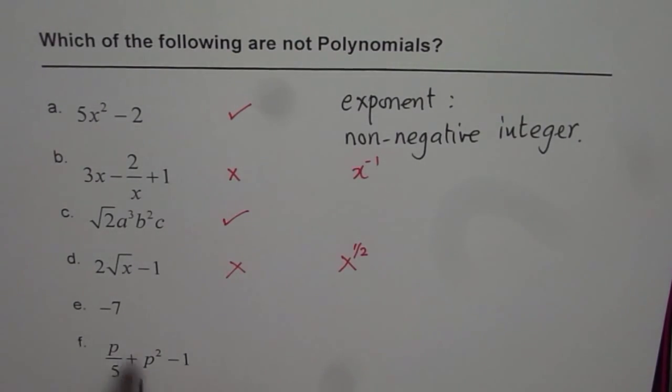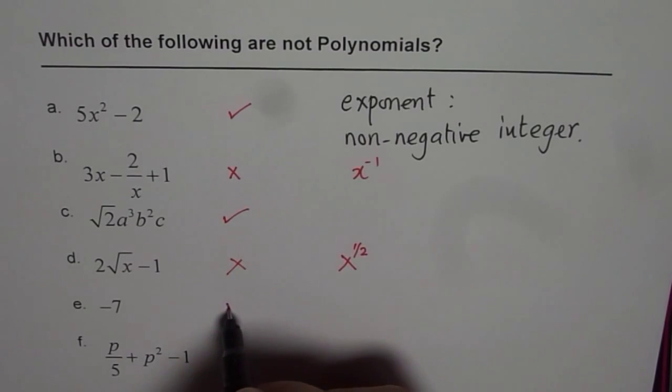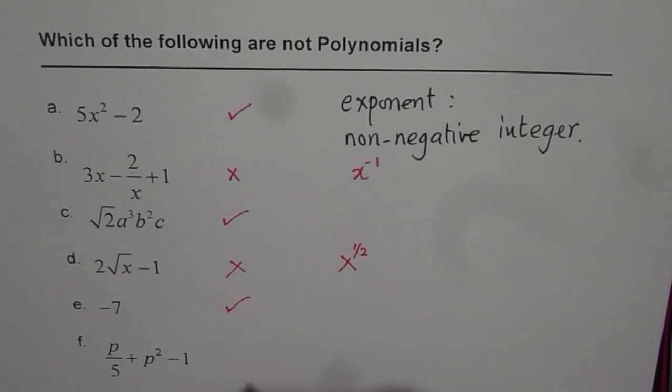Then, we have minus 7 where the degree is 0. It is a constant term. It is a polynomial.